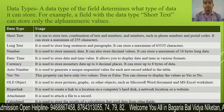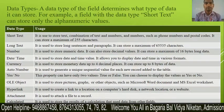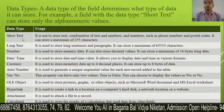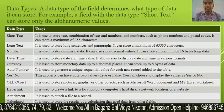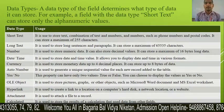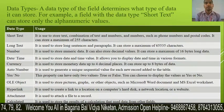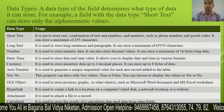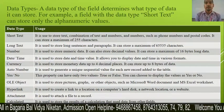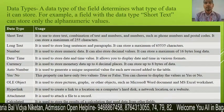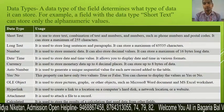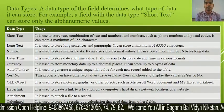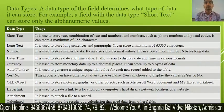Let's talk about which data types are provided in MS Access. First is Short Text. It is used to store text, a combination of text and numbers, and numbers such as phone numbers and postal codes. It can store a maximum of 255 characters.